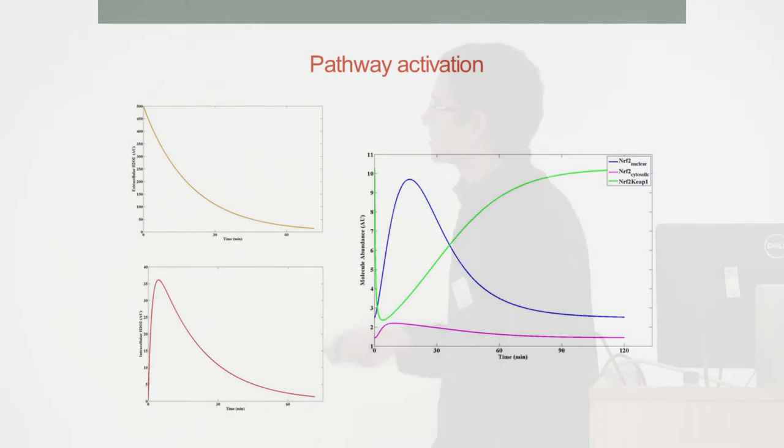And this is just an example of the simulation output the model can produce. So when we simulate an extracellular addition of hydrogen peroxide in the model, which gets scavenged by the cells, and this results in an intracellular accumulation of hydrogen peroxide with this profile, which decays, and it results in an oxidation of complex here in green and a more gradual accumulation of nuclear NRF2 here.